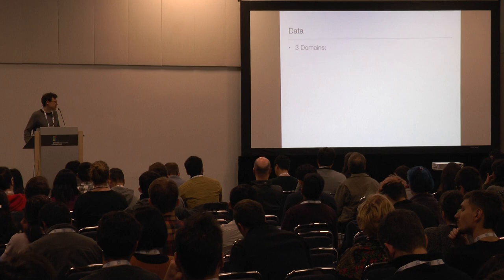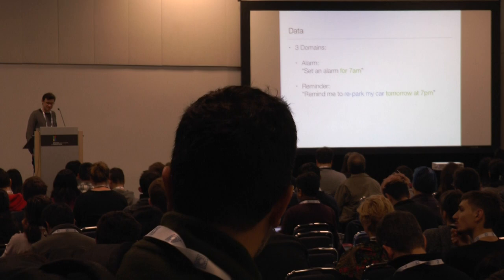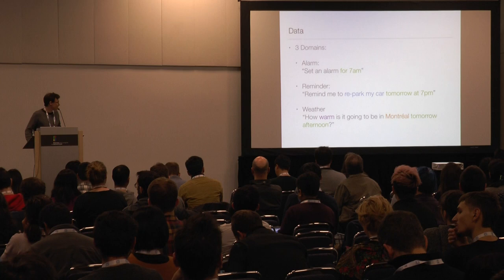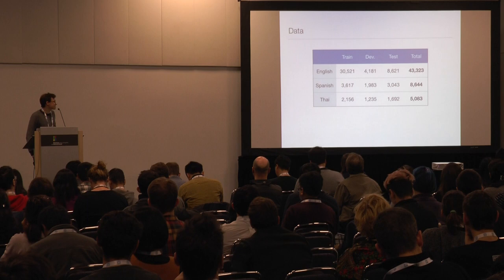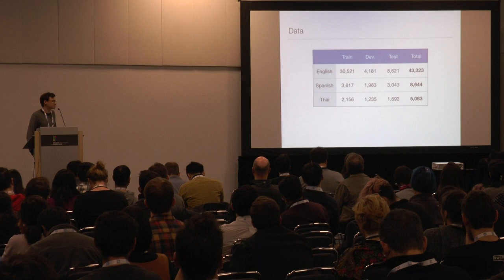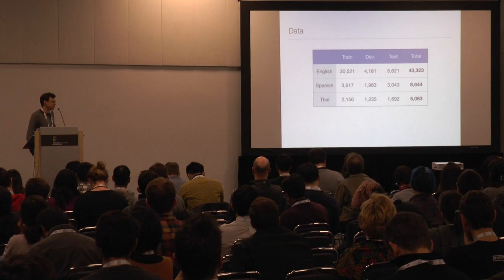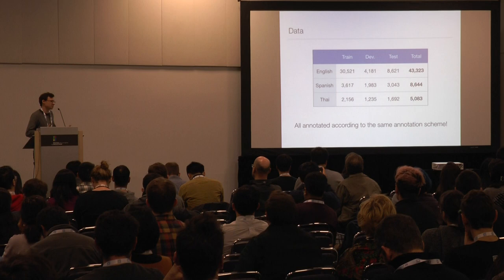We collected the data for three domains in total. One is the alarm domain, with utterances such as 'set an alarm for 7 a.m.' The second is the reminder domain, with utterances such as 'remind me to repark my car tomorrow at 7 p.m.' The third is the weather domain, with questions such as 'how warm is it going to be in Montreal tomorrow afternoon?' We collected utterances for three languages: English served as the high-resource language, and Spanish and Thai as the low-resource languages. For English, we had around 43,000 utterances; for Spanish, around 8,000; and for Thai, around 5,000. Crucially, all of these were annotated according to the exact same annotation guidelines so that transfer learning would be possible.